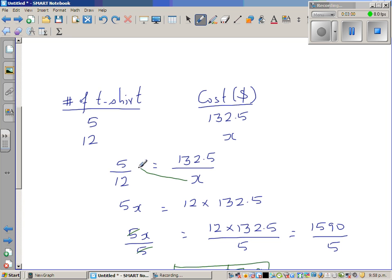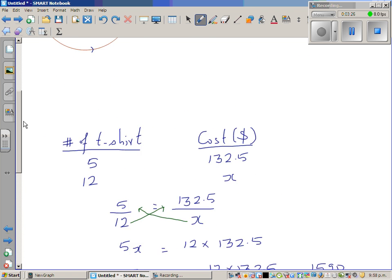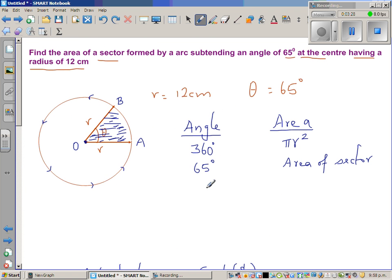So this goes and gets multiplied with five, and this goes and gets multiplied with 132.5. The next step is 5x equals 12 times 132.5. To get rid of this 5x, I would divide this side by 5, so to divide this side by 5, okay, so 5 and 5 gets cancelled and you can check this on the calculator. This is the same approach we're going to do for this example.